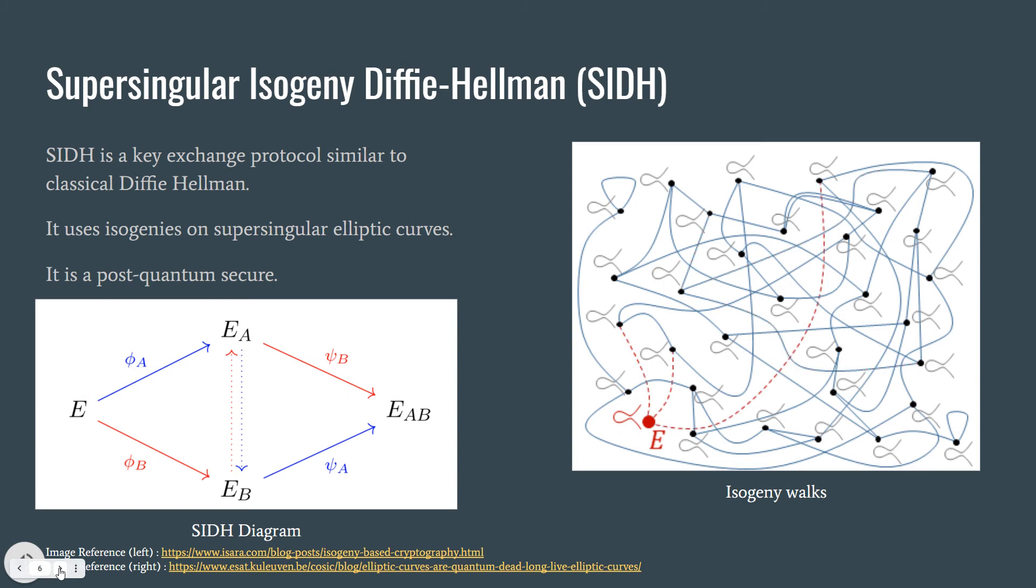Supersingular isogeny Diffie-Hellman, SIDH, is a key exchange protocol similar to classical Diffie-Hellman. It uses isogenies on supersingular elliptic curves. Because the underlying problem is very hard on the supersingular elliptic curves, it's post-quantum secure.